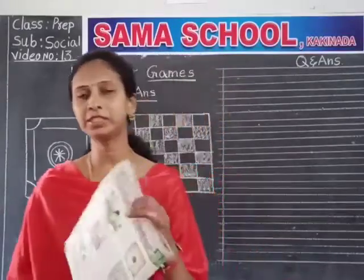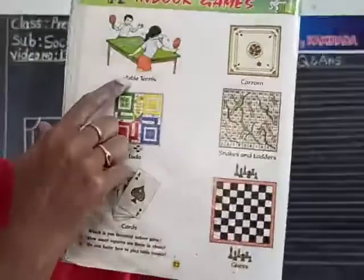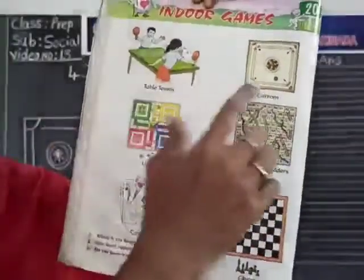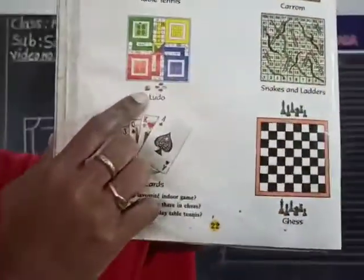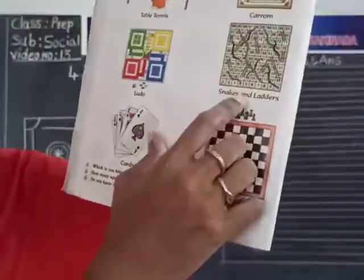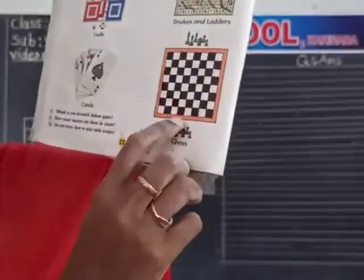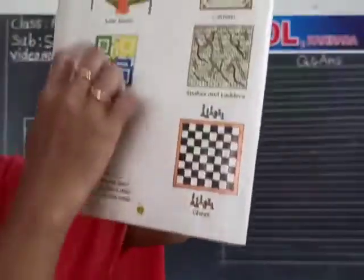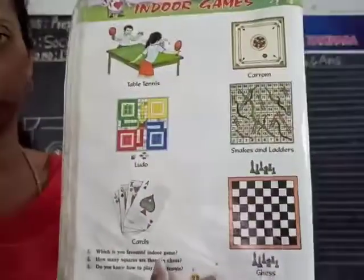See here, these are the indoor games I already explained to you. Table tennis, carom, ludo, snakes and ladders, cards, chess. These games were already explained in the previous class and the spellings were given to you.